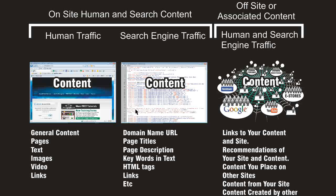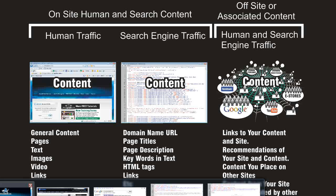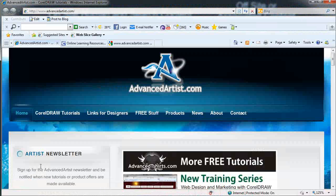Those links also create signals that Google and the search engines use to evaluate the quality of your content. What Google is doing as a search engine is looking at your website and then looking at the associated off-site content, giving your site a value based on what's going on on the internet. If you look at how Google has ranked advancedartist.com in its search engines, obviously it's ranked as one of the best sites in the world, and people across the internet are saying the CorelDRAW training on the website is some of the best in the world.